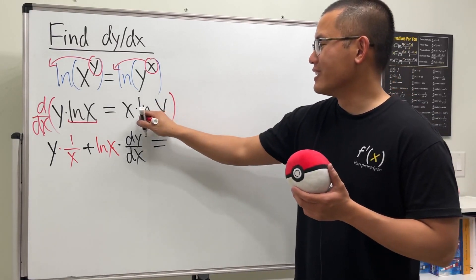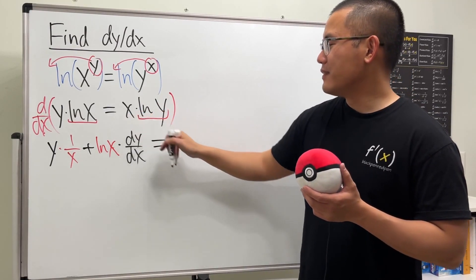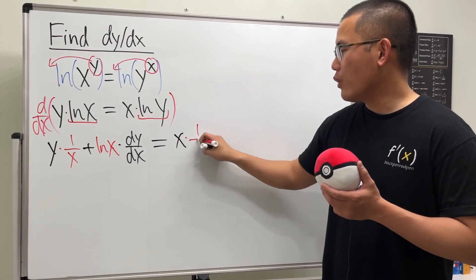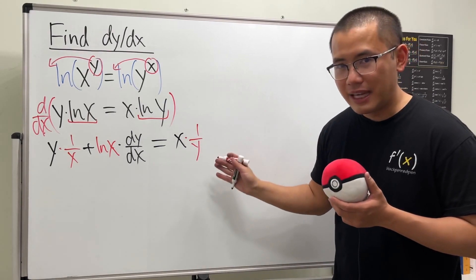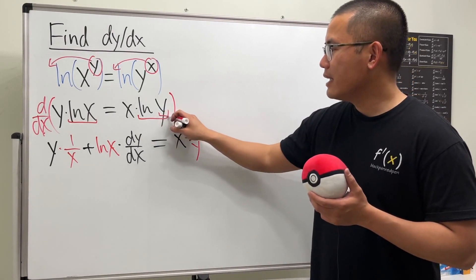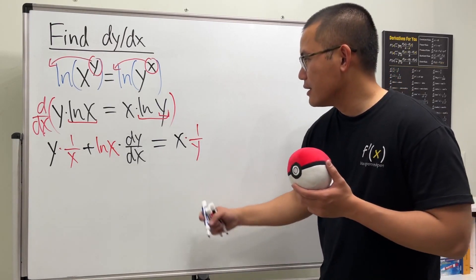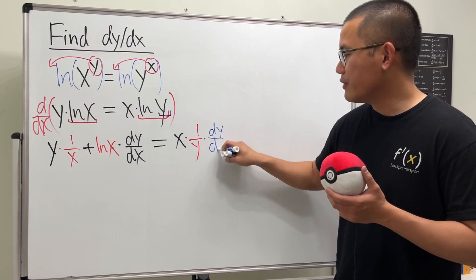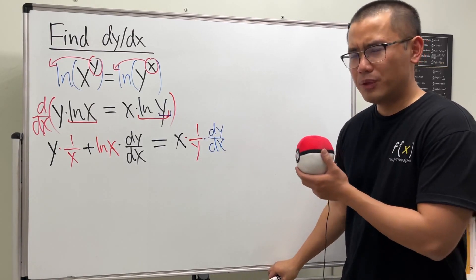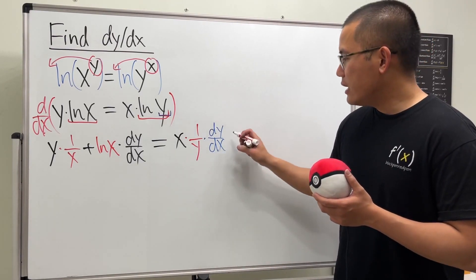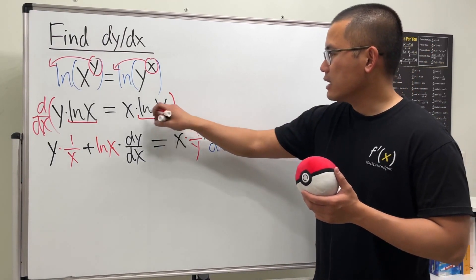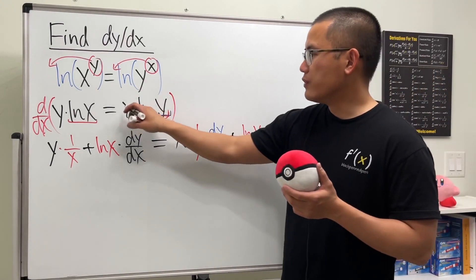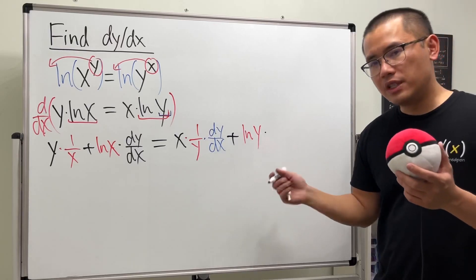On the right-hand side, same thing but different order. First keep x and multiply by the derivative of ln(y), which is 1/y. But because y is a function of x, we also multiply by dy/dx here because of the chain rule — be really careful with this part. Then add the second function, ln(y), multiplied by the derivative of x, which is just 1.